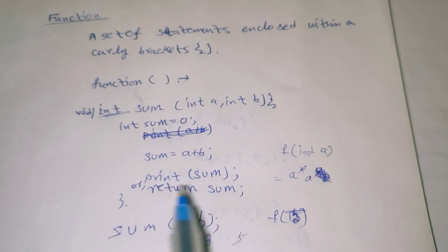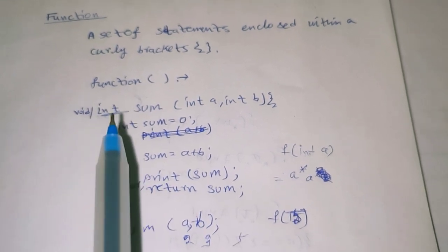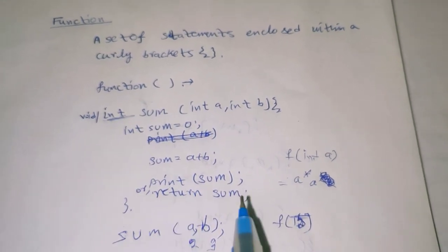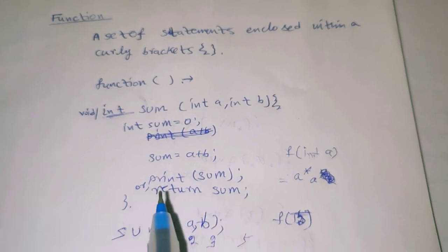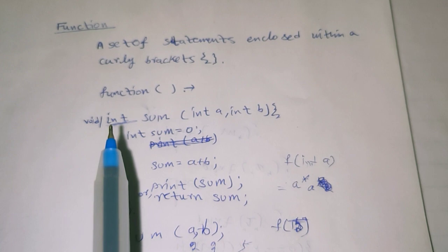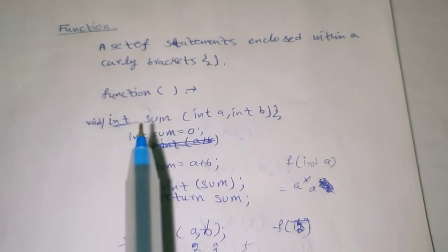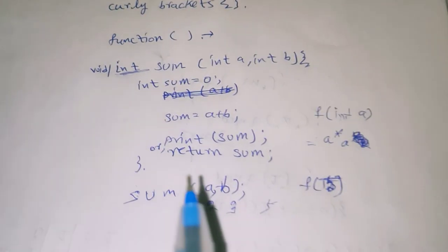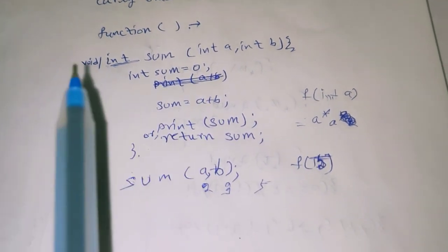If we're using void, then we print the sum. Otherwise, if the return type is int, we return that value. Printing sum is for void. Otherwise, if we are using int, float, or double, we should return that value.